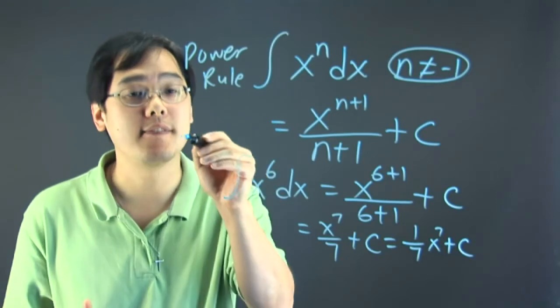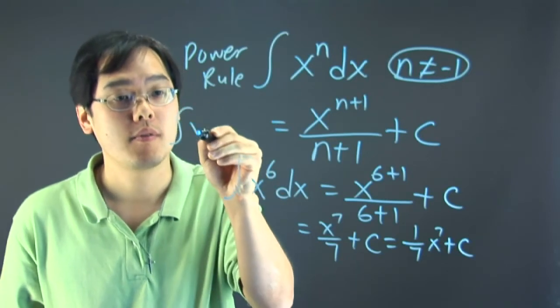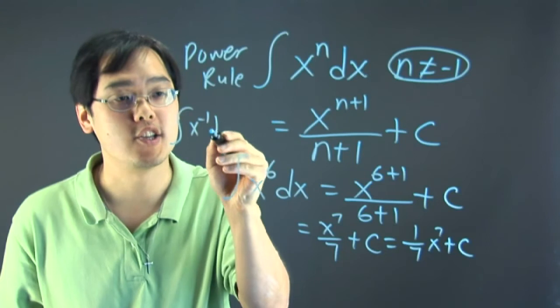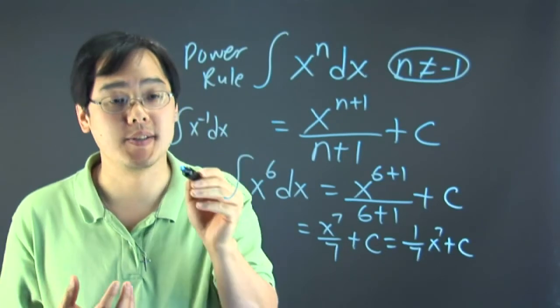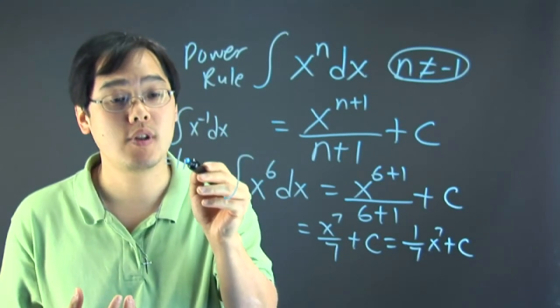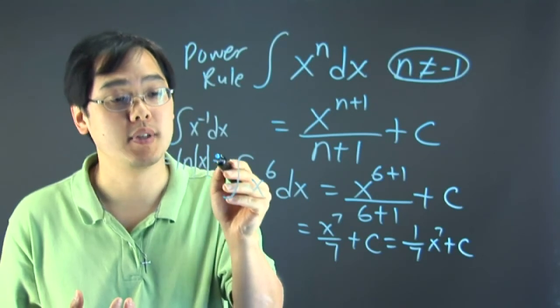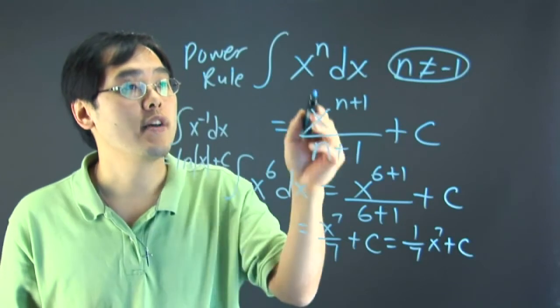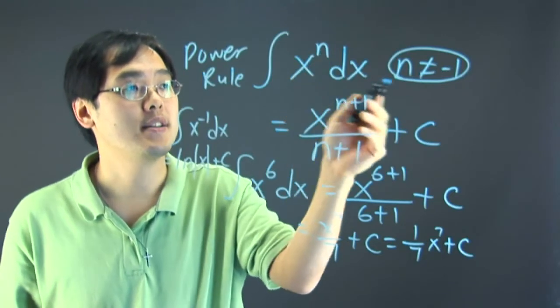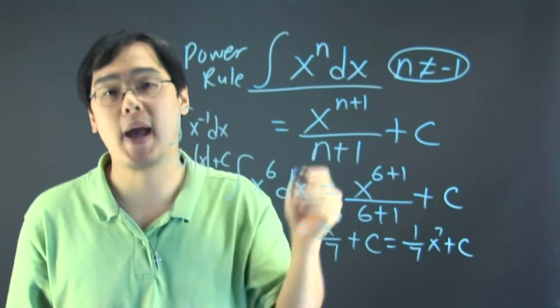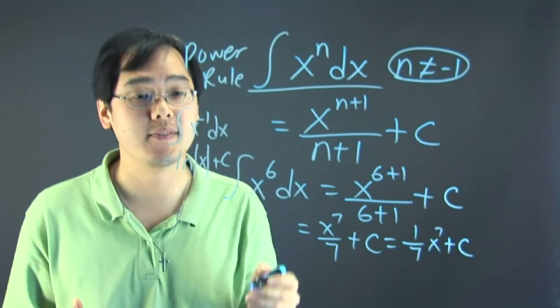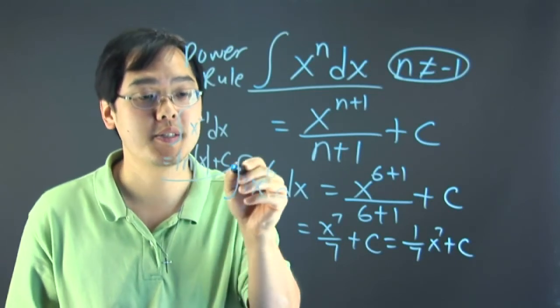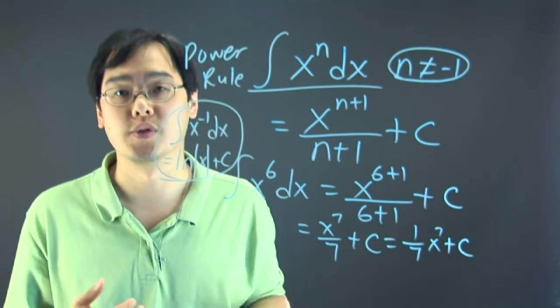If you have negative one as your exponent, the rule for that is the natural log of the absolute value of x plus C. So when it comes to the integration rules for all exponents that are not negative one, you can use this for the power rule. But when your exponent is negative one, you can use this particular rule to help you.